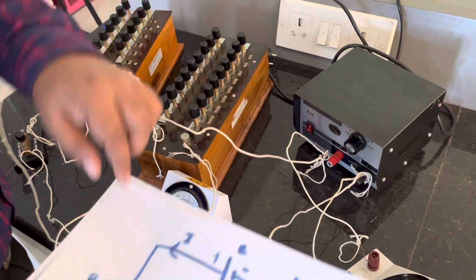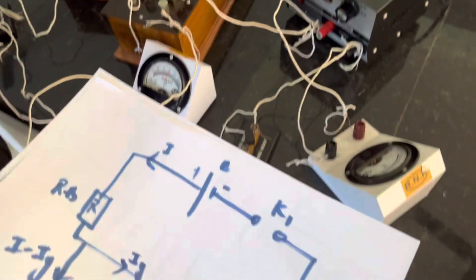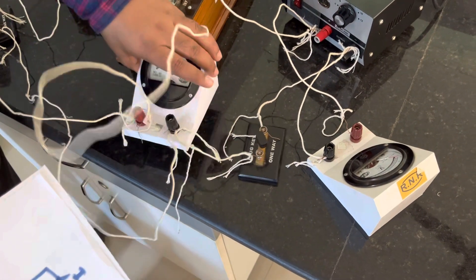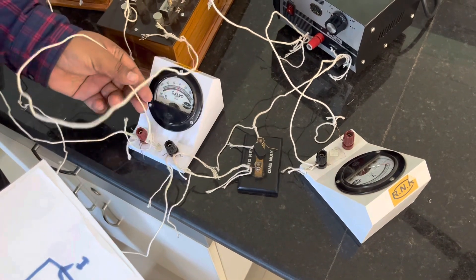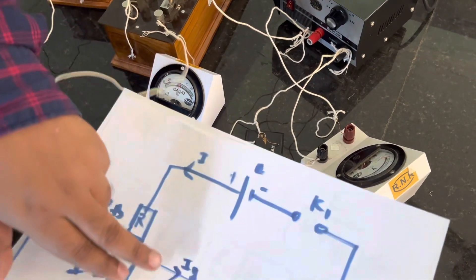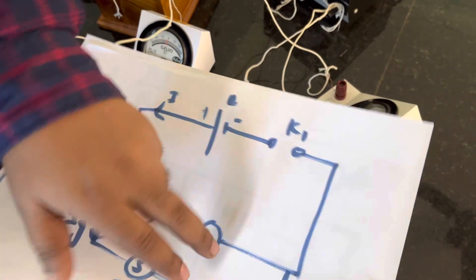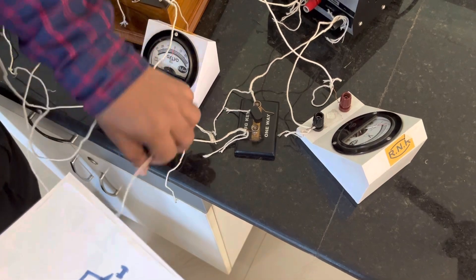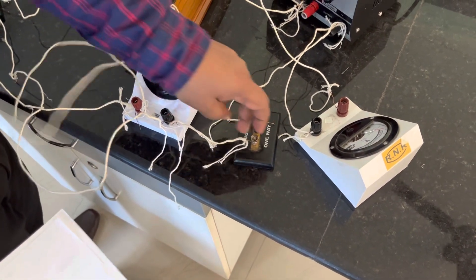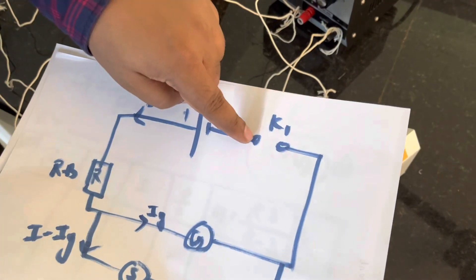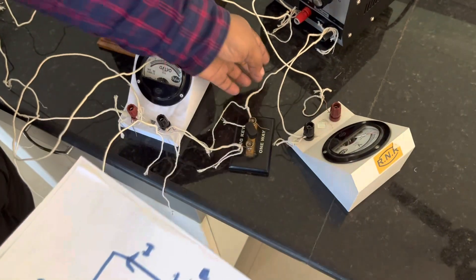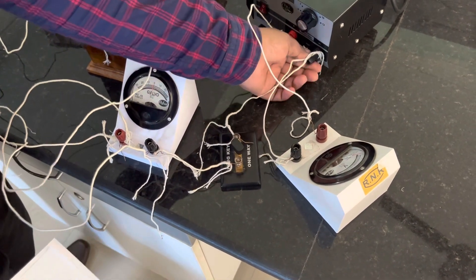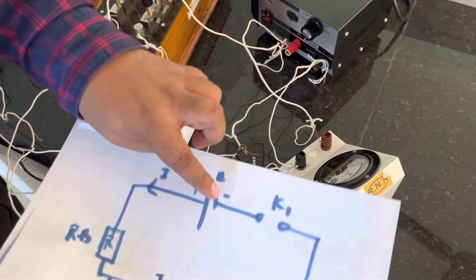From the power supply, we come to the resistance box — from the red wire it is connected to this resistance box where we can provide some resistance to the circuit. From the resistance box, the other terminal is connected to the galvanometer. The galvanometer's other end is connected to the key, and the key's second terminal is connected to the negative terminal of the power source.